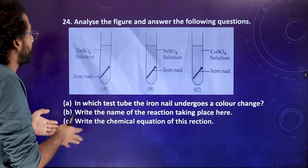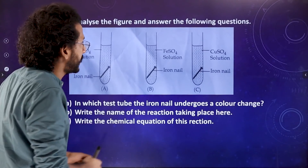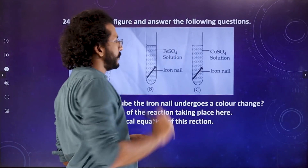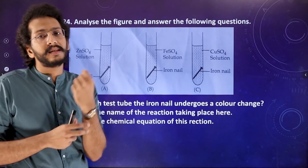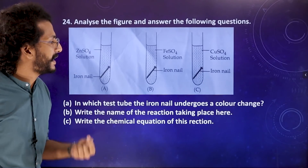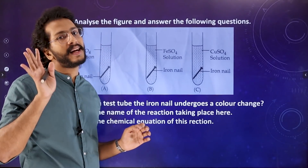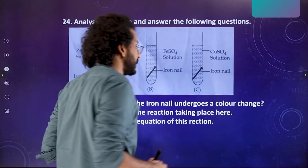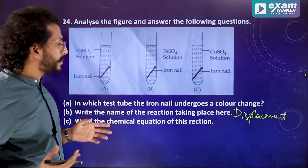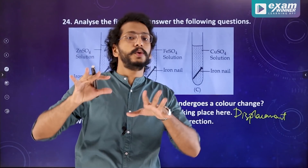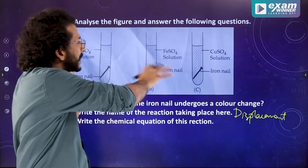Question number 24: three test tubes contain zinc sulfate solution, ferrous sulfate solution, and copper sulfate solution, each with an iron nail. In which test tube does the iron nail undergo a color change? The reaction taking place is a displacement reaction.